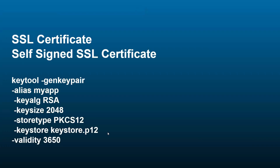There are two ways to create an SSL certificate. One way is to purchase it from a third-party vendor — you can get the certificate free for 90 days, then renew it every 90 days, so you can use it free of cost for a lifetime by renewing. Another way is a self-signed certificate, where we take help from Java's keytool utility to create our own self-signed certificate.